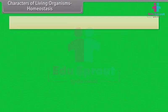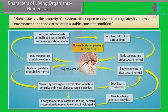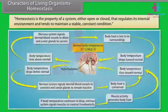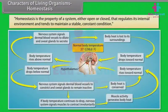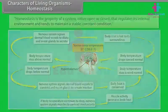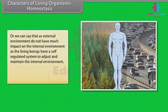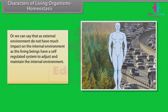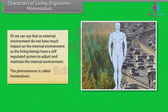Homeostasis is the property of a system, either open or closed, that regulates its internal environment and tends to maintain a stable constant condition. As external environment does not have much impact on the internal environment, living beings have a self-regulated system to adjust and maintain the internal environment. This phenomenon is called homeostasis.